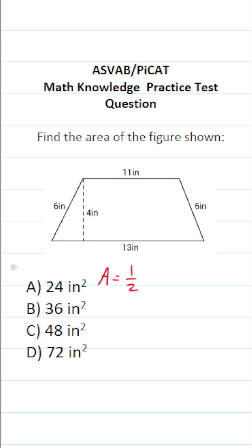It's going to be one half times base one plus base two times the height of the trapezoid. So let's go ahead and start filling this in.